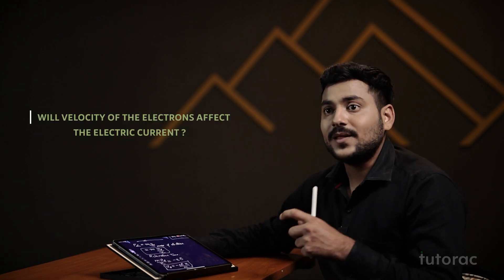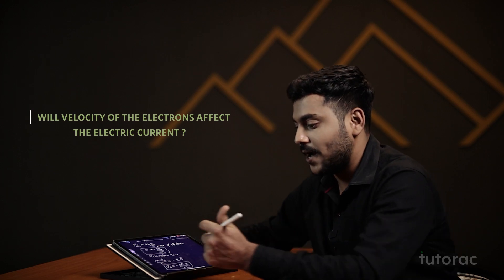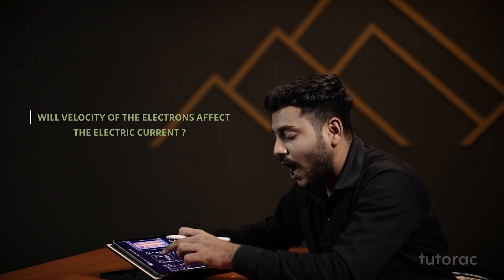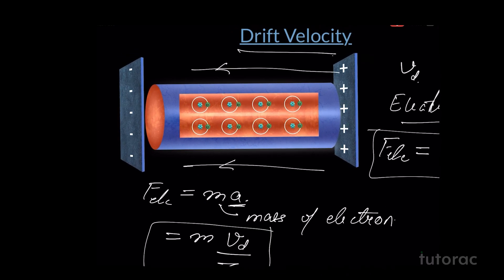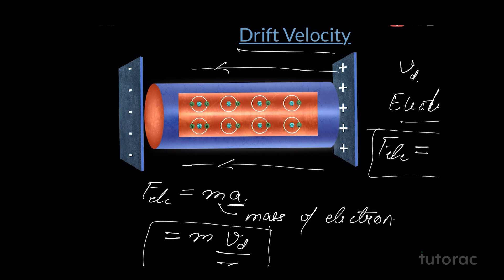Will drift velocity affect the current as well? Let's try to understand how we define the electric current. We define electric current as the flow of electrons — the electrons flowing per unit volume. If we define a small section of thickness dx and area A, then current I equals Q divided by T, where T is the observation time, not tau.